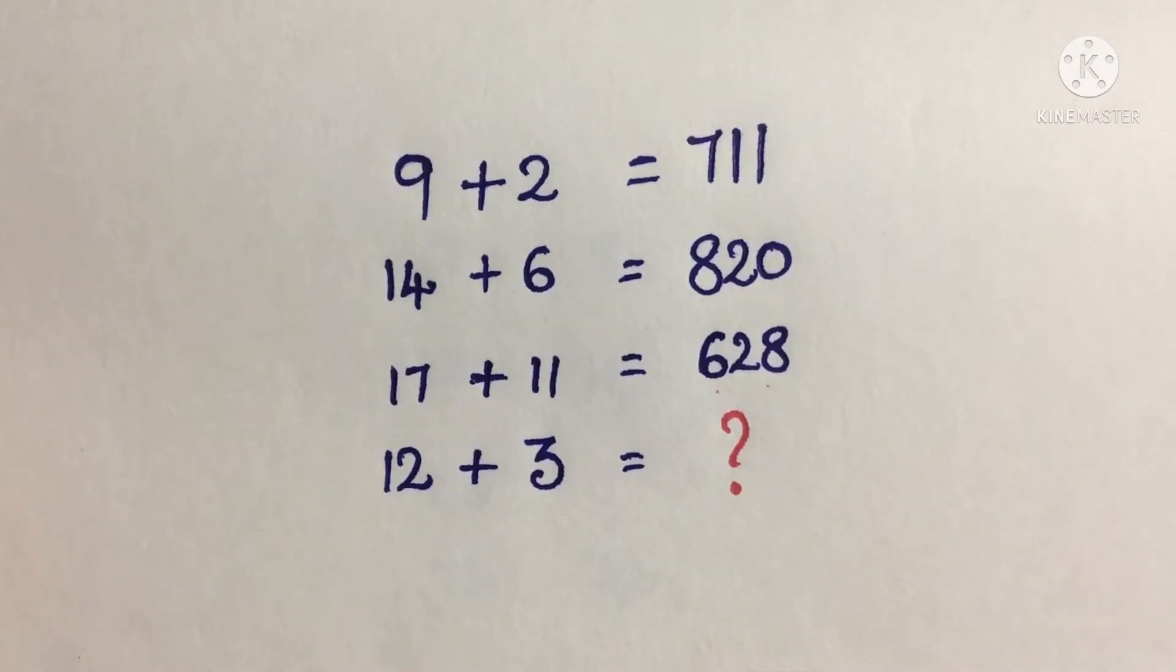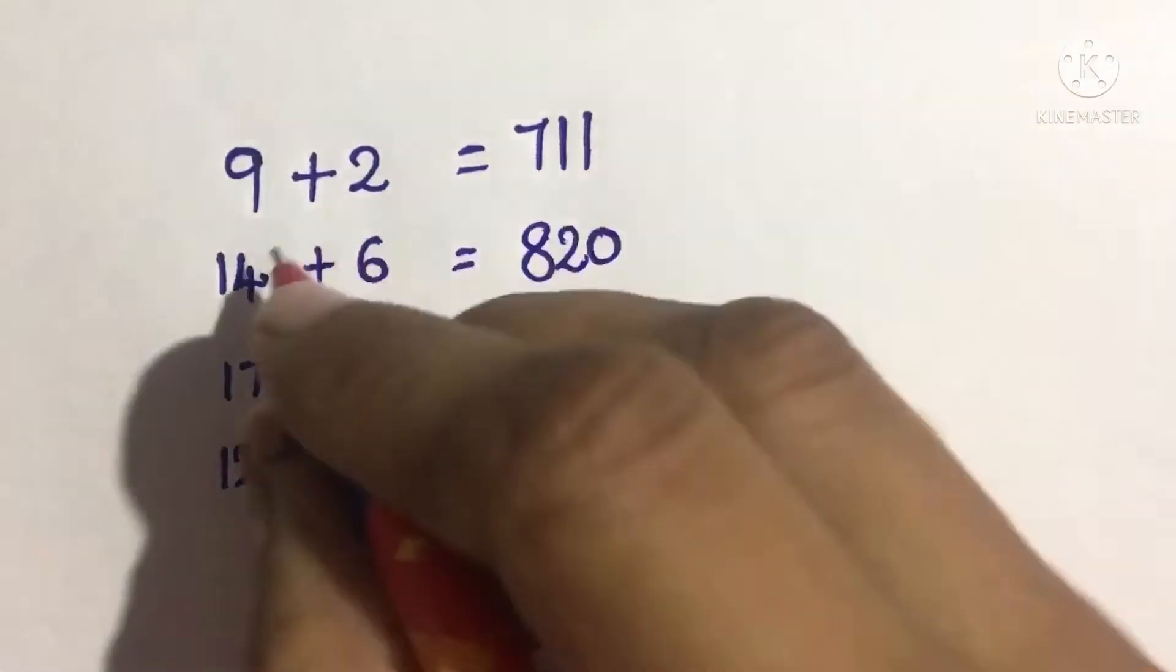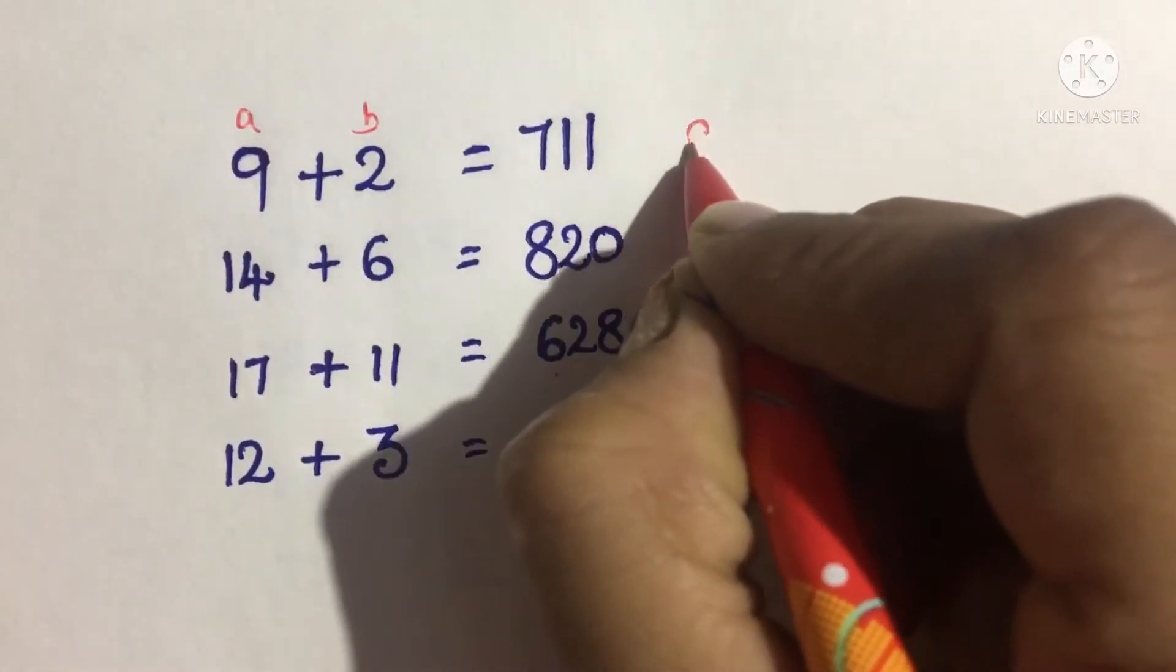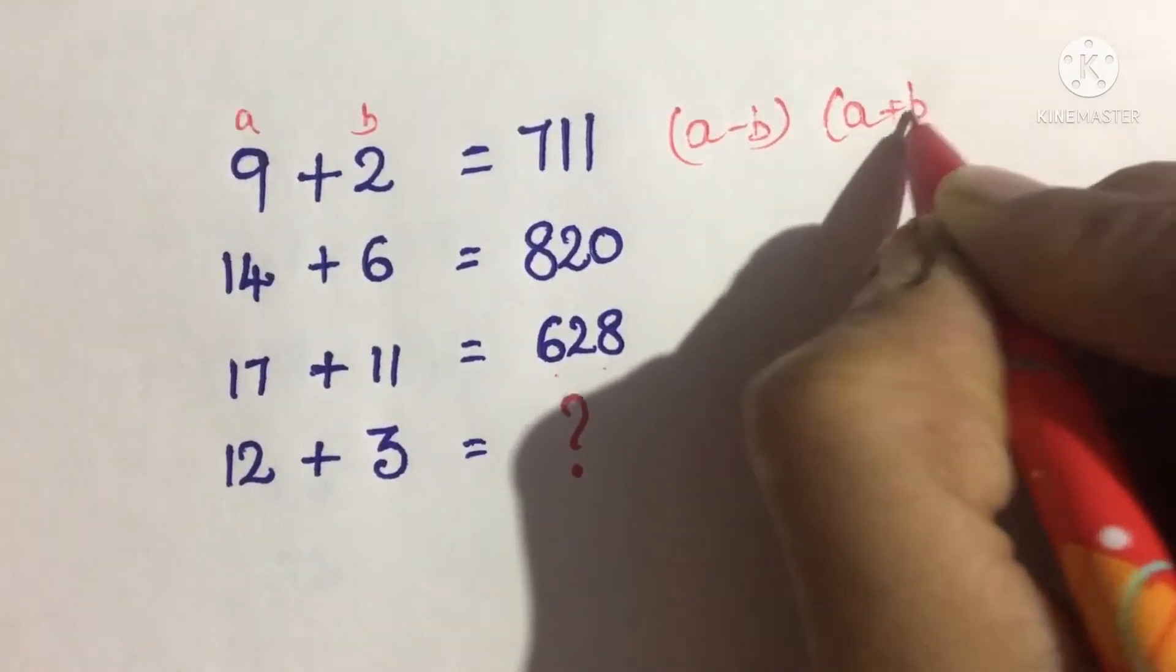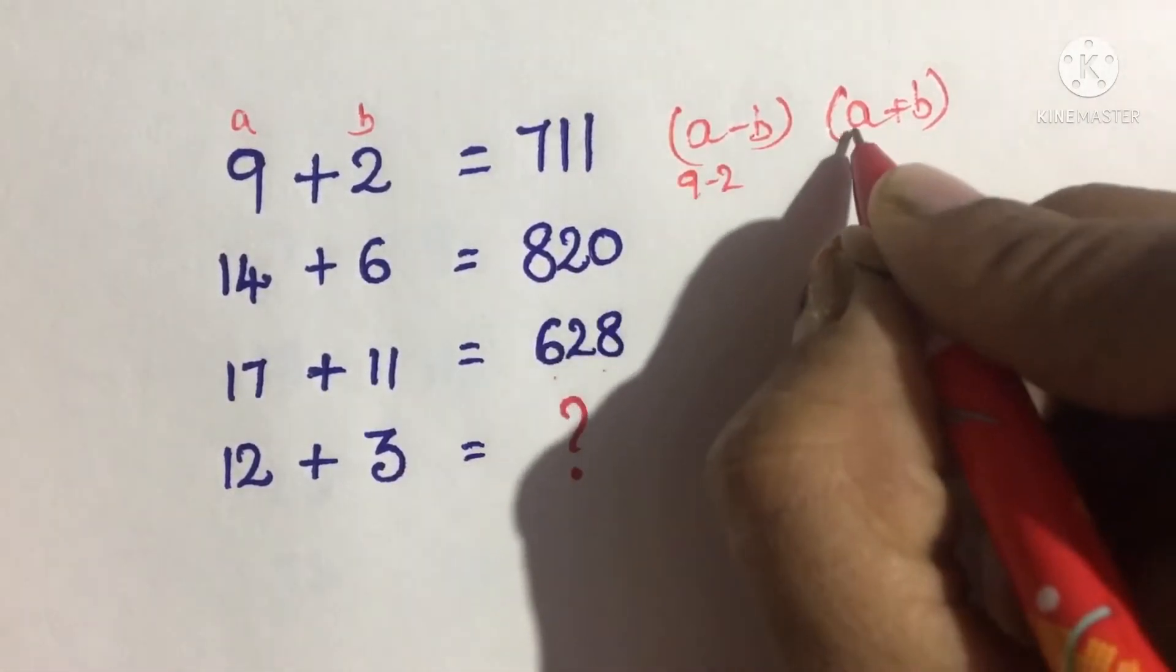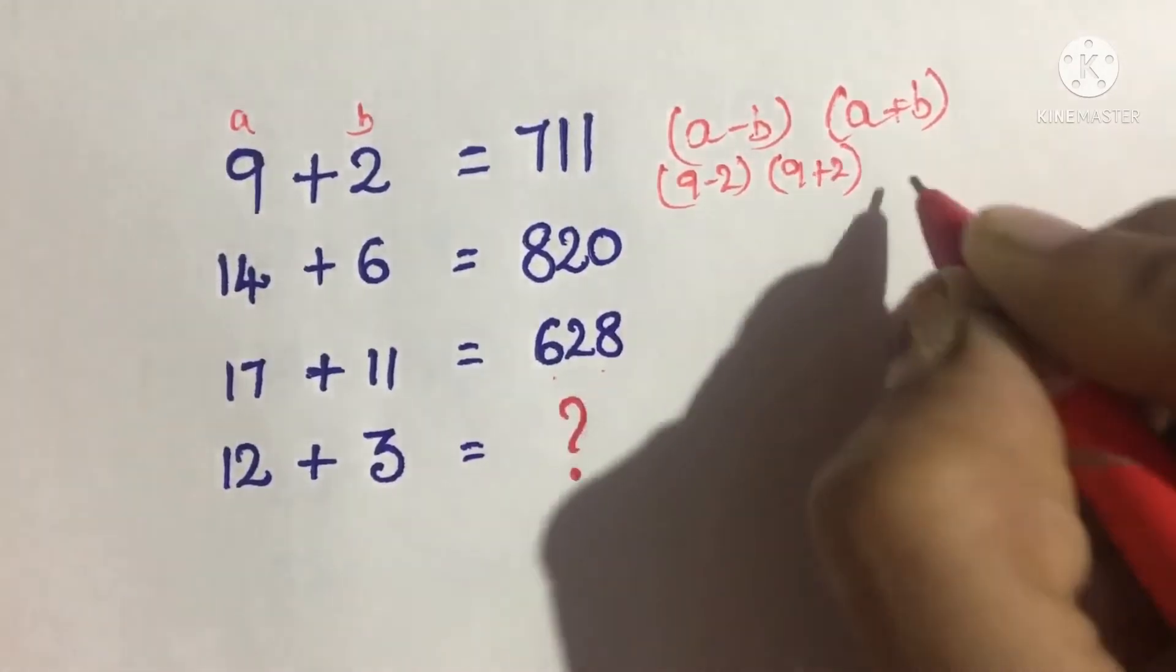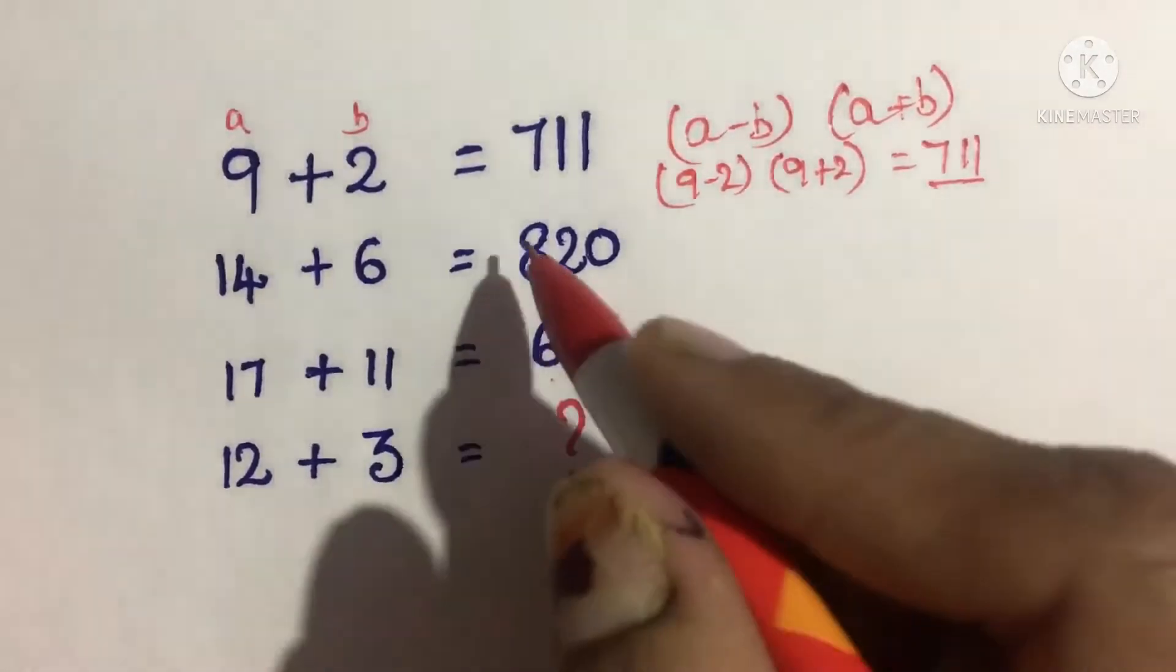Now I'll tell you the trick to solve this. If a plus b, then the answer is a minus b and a plus b concatenated together. So for 9 minus 2 equals 7, and 9 plus 2 equals 11, giving us 711. This is the method to follow.